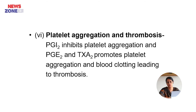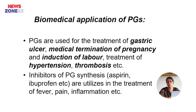Platelet aggregation and thrombosis: Prostaglandin I2 inhibits platelet aggregation, while prostaglandin E2 and thromboxane A2 promote platelet aggregation and blood clotting, leading to thrombosis. Biomedical applications of prostaglandins include treatment of gastric ulcer, medical termination of pregnancy, induction of labor, treatment of hypertension and thrombosis. Inhibitors of prostaglandin synthesis — aspirin and ibuprofen — are used for treatment of fever, pain, and inflammation.